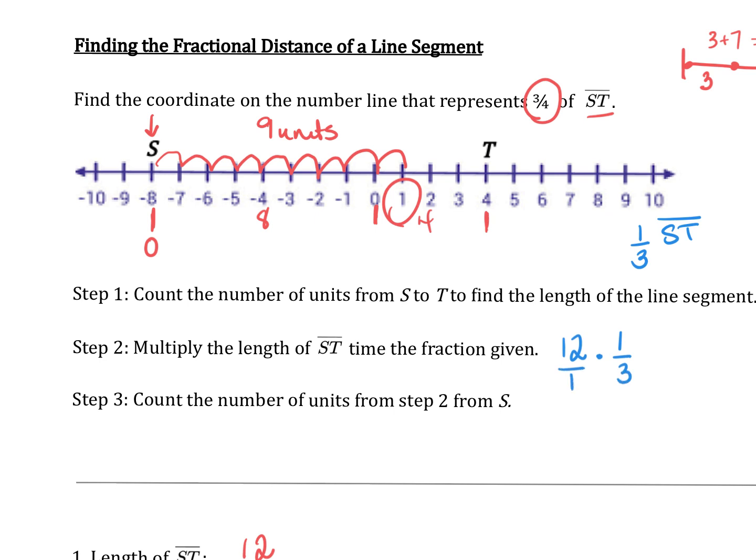Put our whole number over 1 and multiply straight across. 12 times 1 is 12. 1 times 3 is 3. And I can simplify 12 divided by 3 to be 4. So that means 4 units represents 1 third of the line segment ST.